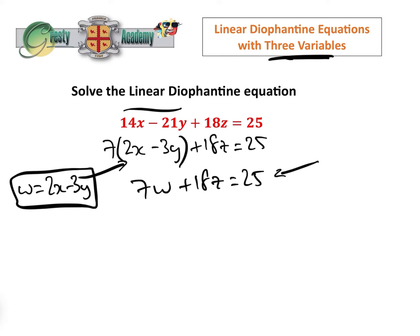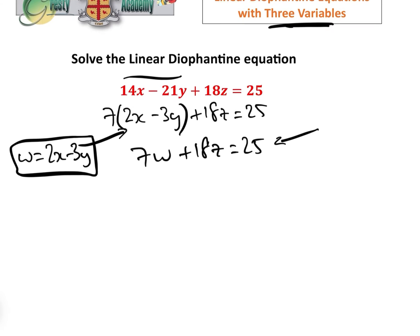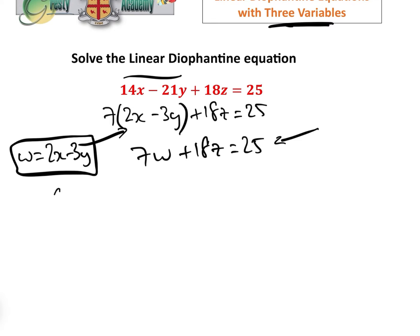That's going to give us 7w plus 18z equals 25, which is now a Diophantine equation in two variables. By the way, if you haven't watched our video solving linear Diophantine equations using Euclid's algorithm, please go and watch that. The link is in the description because that will explain what I'm about to do in more detail.